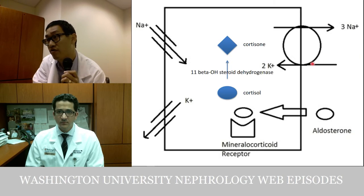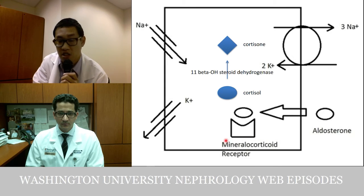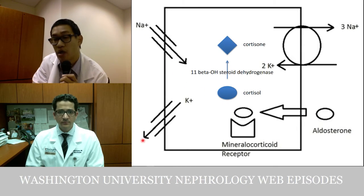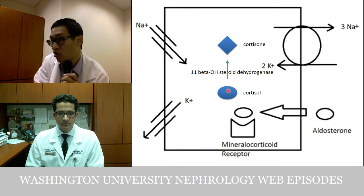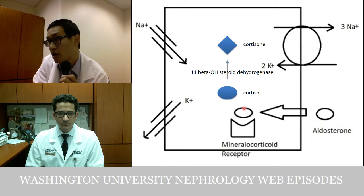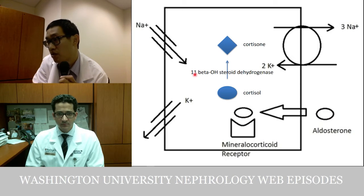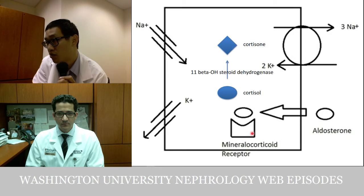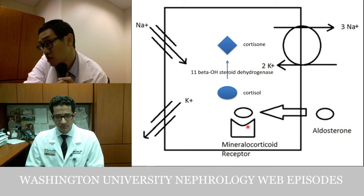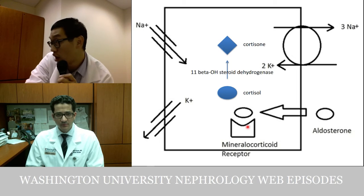In the cortical collecting duct principal cell, the ENaC and ROMK channels drive sodium reabsorption and potassium excretion under the effect of aldosterone activating the mineralocorticoid receptor. Interestingly, cortisol — present in abundance over aldosterone — can also activate this mineralocorticoid receptor. However, 11-beta-hydroxysteroid dehydrogenase 2 in this cell degrades cortisol to inactive cortisone, which cannot activate the receptor, protecting it under normal circumstances.